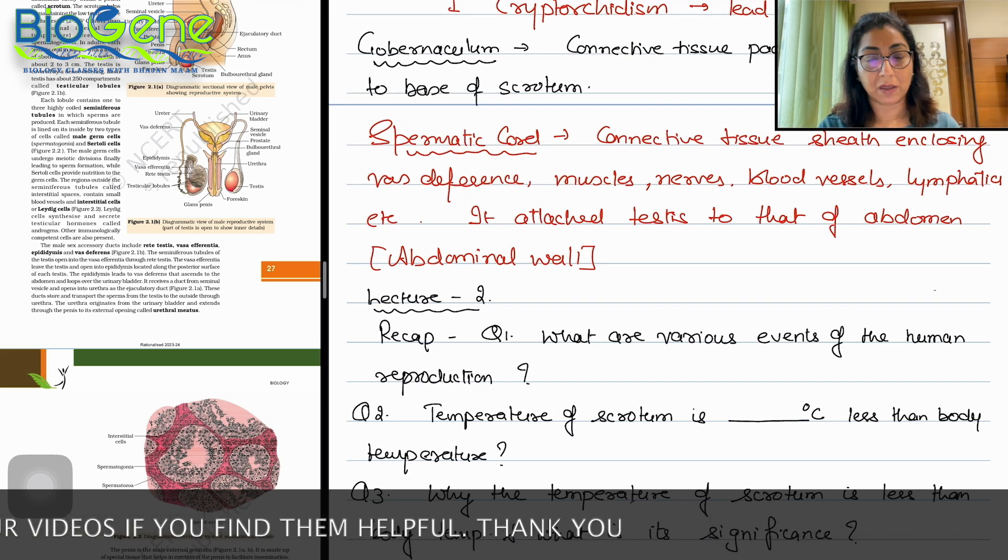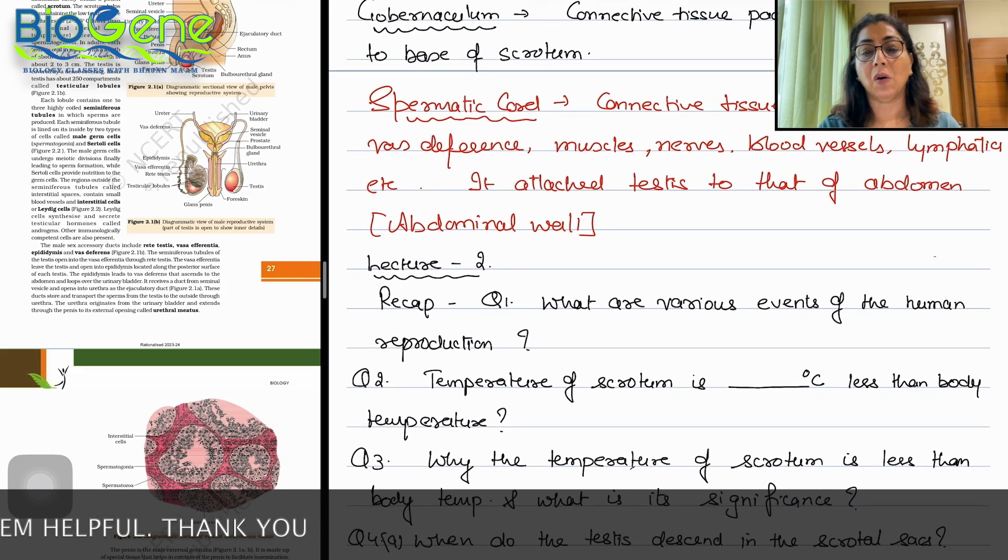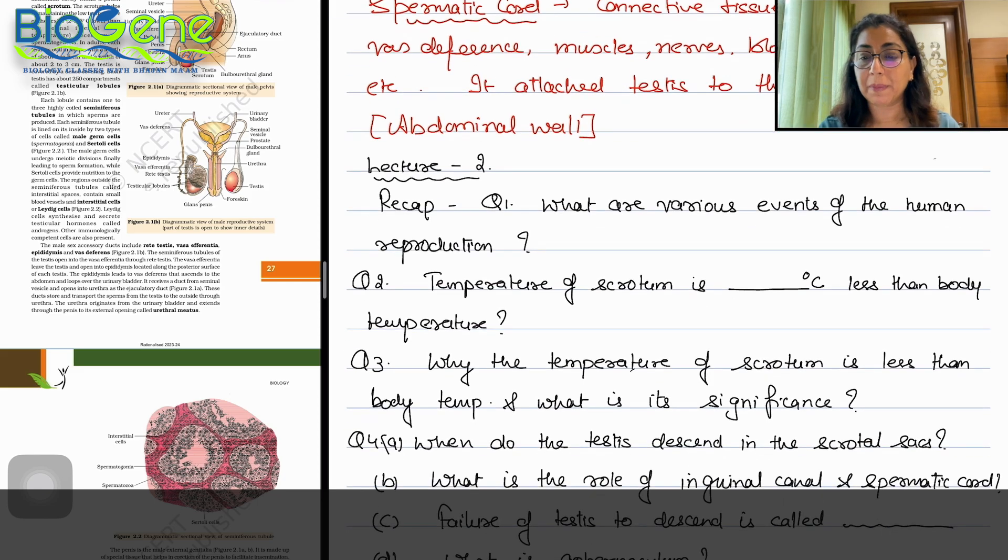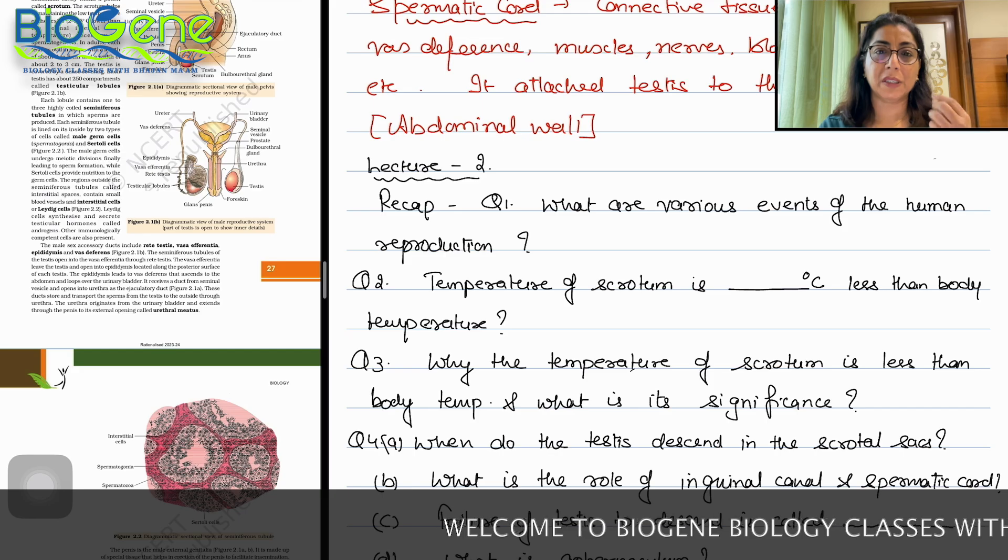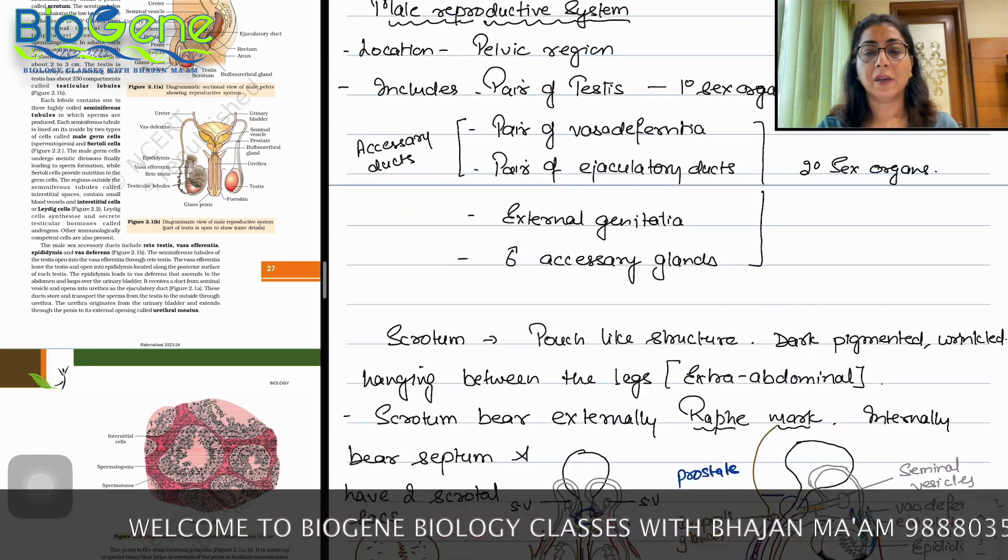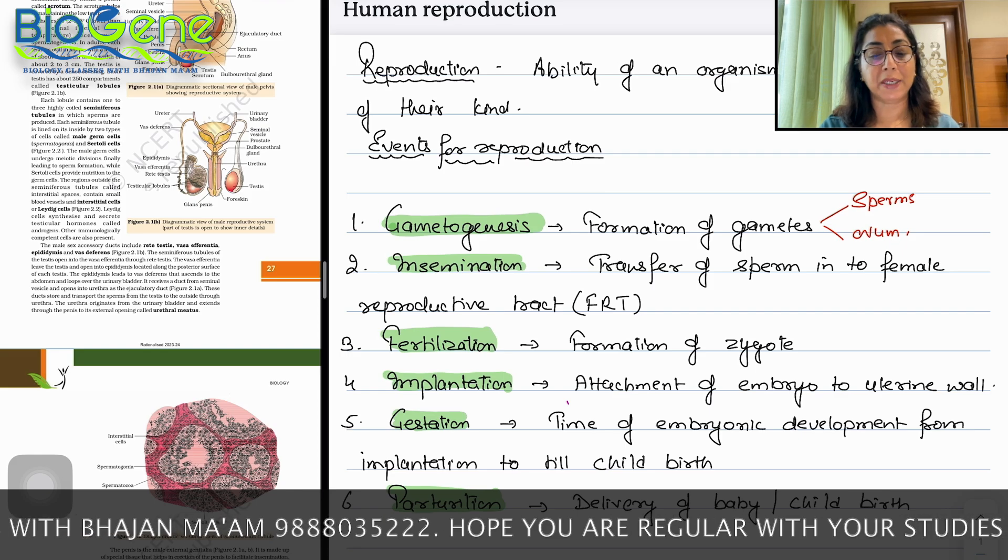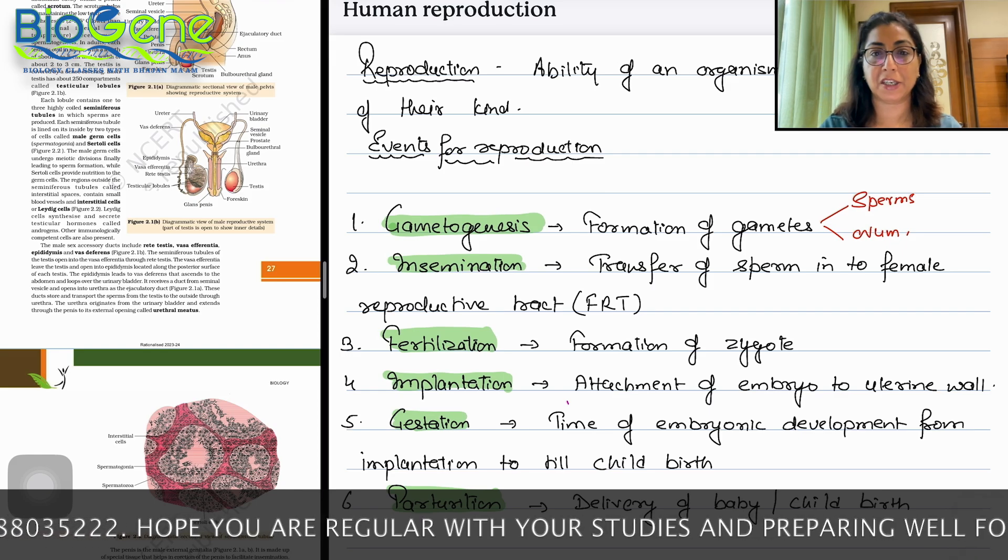So this was our lecture 1. Now we will talk about lecture 2. In lecture 2, I have some questions for you. What are the various events of human reproduction? So you can start with a recap. In this case we can start with gametogenesis, insemination, fertilization, implantation, gestation, and parturition.